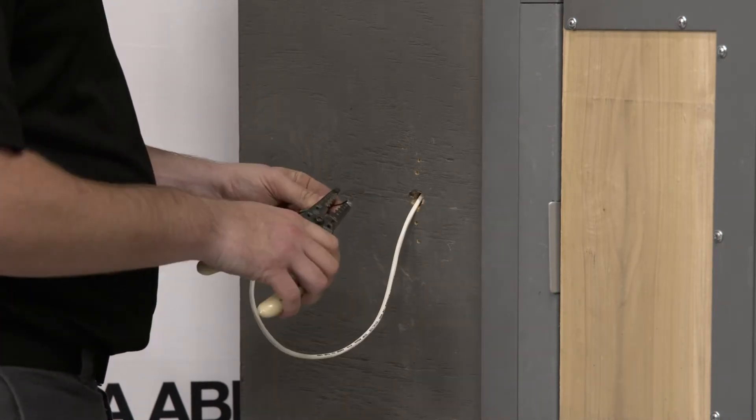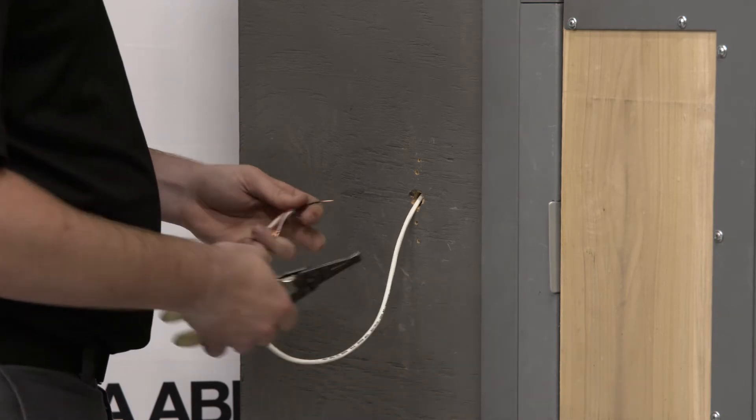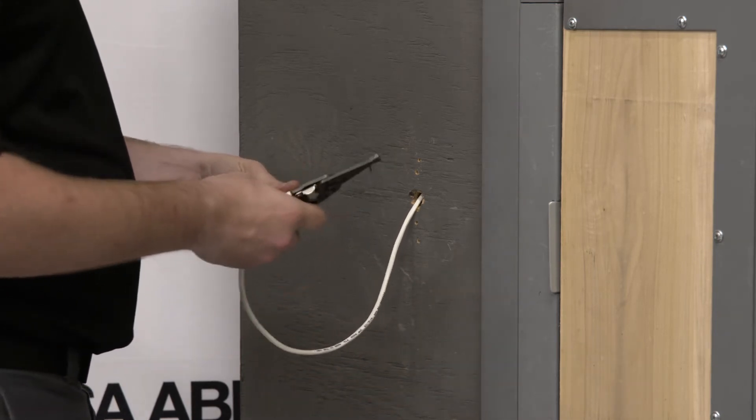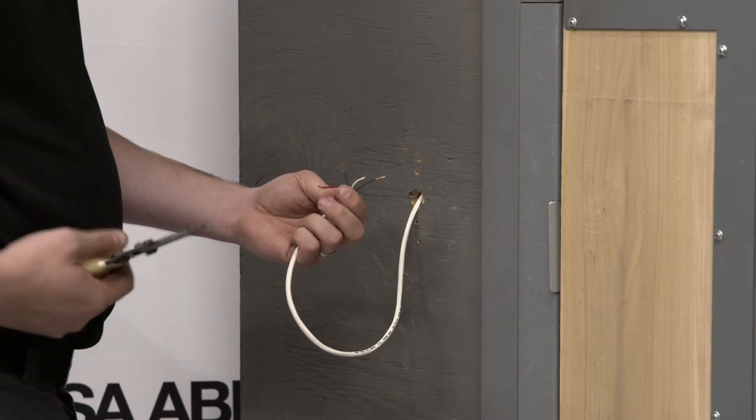Using your wire strippers, strip back approximately a quarter inch to expose bare wire on all four of your conductors on the wave-to-open switch side.